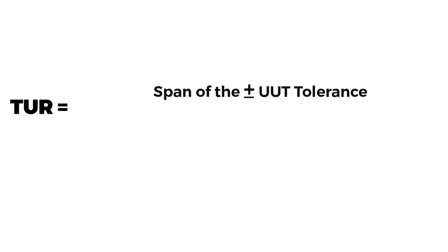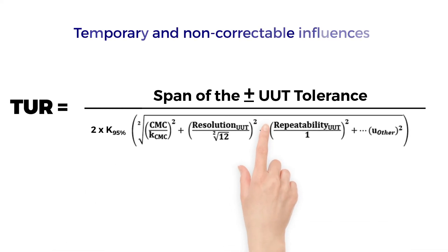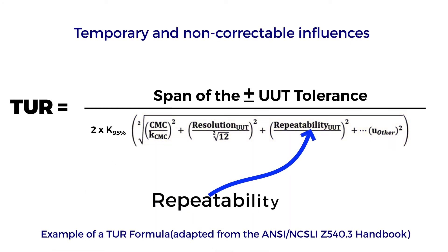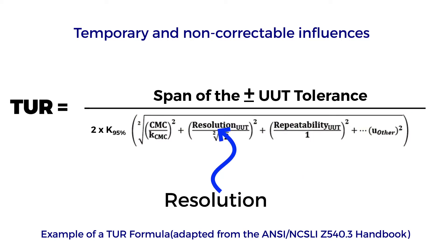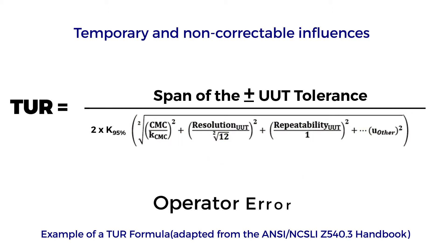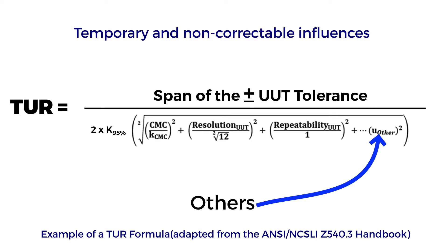The formula for TUR consists of the span of the tolerance in the numerator. The denominator includes temporary and non-correctable influences incurred during the calibration, such as repeatability, resolution, error in the measurement source, operator error, error in correction factors, environmental influences, and others.